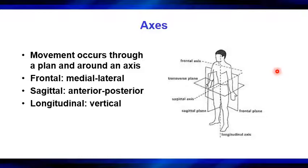The axes run perpendicular to the planes. Think of a movement through the sagittal plane — shoulder flexion, hip flexion, knee flexion, elbow extension, hip extension, knee extension. They all occur through the sagittal plane and rotate around the frontal or medial-lateral axis. Movement that occurs in the sagittal plane rotates around the frontal or medial-lateral axis — it's called the medial-lateral axis because that's how it runs.